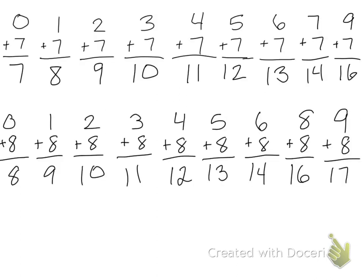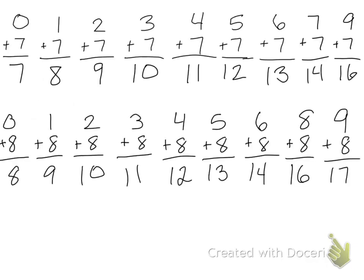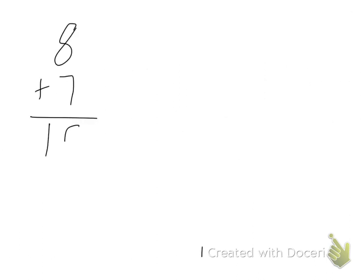So let's practice the ones that we don't know, and it's the same one for each, and that is 8 plus 7. So if 8 plus 6 is 14, then we know that 8 plus 7 must be 15. Another strategy we could use is we could double 7, 7 plus 7 is 14, and then add one more.